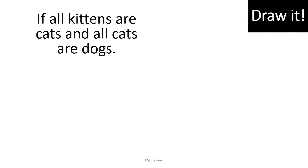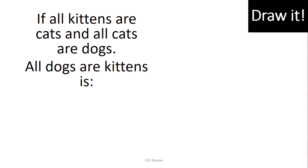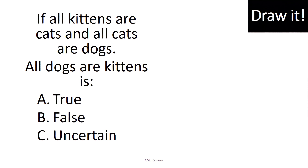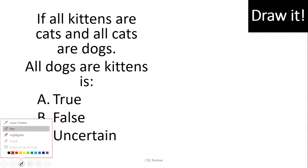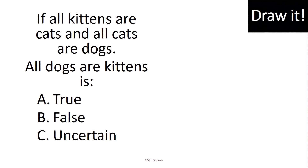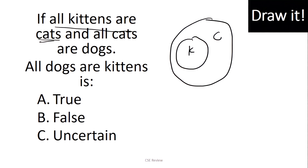Next question: If all kittens are cats and all cats are dogs, is 'all dogs are kittens' true, false, or uncertain? We're going to draw it. First: all kittens are cats — the kittens circle is inside the cats circle. Then, all cats are dogs — remember, real life does not apply here. Even though cats and dogs are different in real life, the statement says all cats are dogs, so we just accept it.